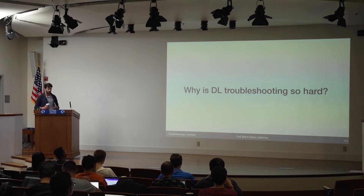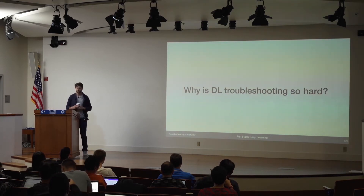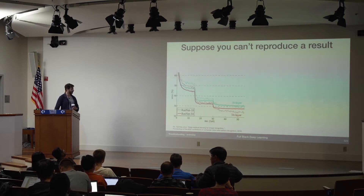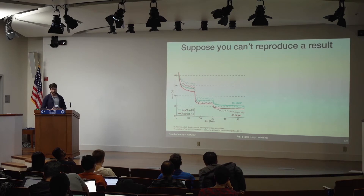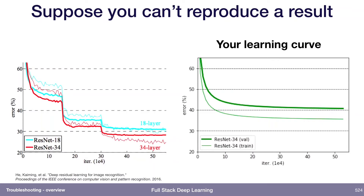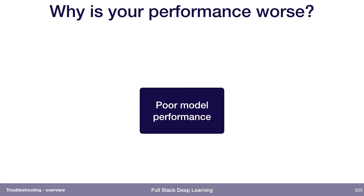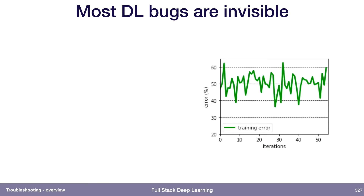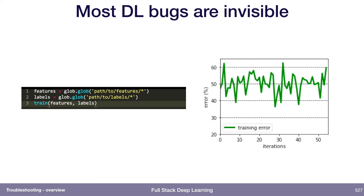The first thing I want to go into is why this is true — why is it so hard to troubleshoot neural networks? Suppose you are trying to reproduce a result and you can't do it. This is the learning curve from the original ResNet paper, and maybe your learning curve looks something like this — significantly worse. You might ask yourself: why is the performance of my model worse than the paper I'm trying to reproduce? My learning curve looked like the one on the right, which is basically just random.